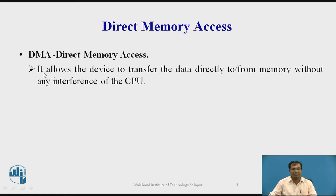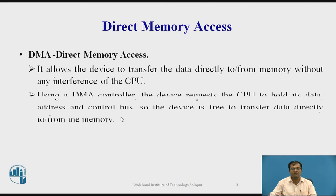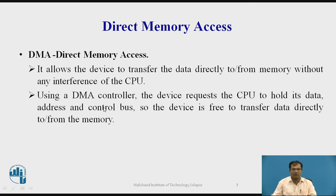DMA stands for direct memory access. It allows the device to transfer data directly to or from memory without any interference of the CPU. Using a DMA controller, the device requests the CPU to hold its data address and control buses so that the device is free to have interaction with memory to transfer the data.